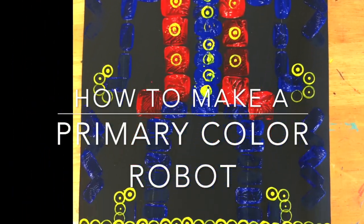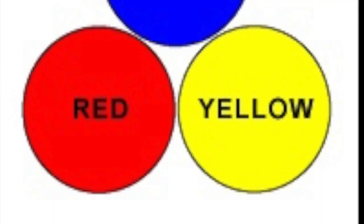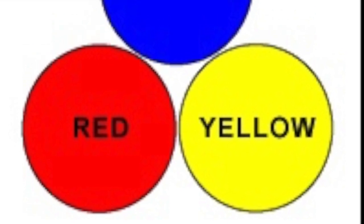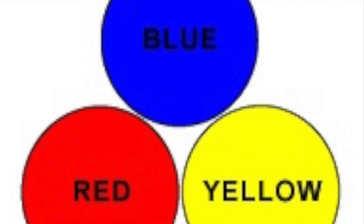How to make a primary color robot. The primary colors are red, yellow, and blue, and we're going to use that knowledge to make a robot today.